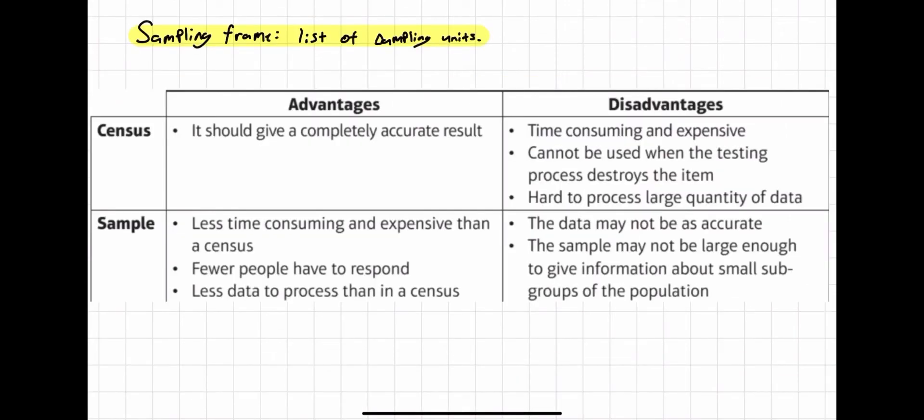So there are various strengths and limitations of using the census versus a sample. The biggest advantage of a census is that it gives you a completely accurate result because you're asking every single person or every single product. It gives you a completely accurate result free of bias. However, censuses can be time consuming and expensive if you have a really large population, and it cannot be used when the testing process destroys the item. For example, if you're testing at what voltage ovens explode, you can't use a census of those ovens, otherwise you'd have none left to sell.